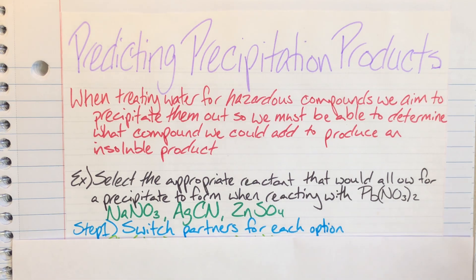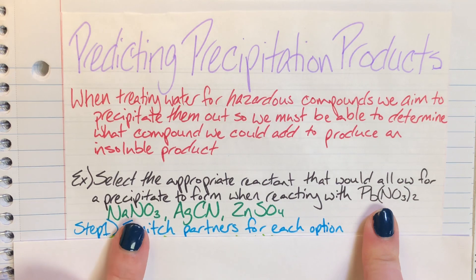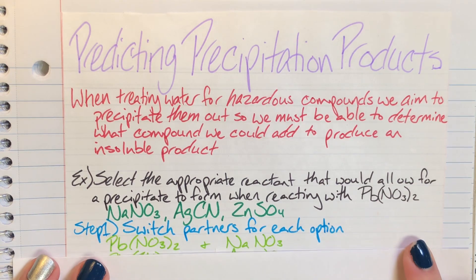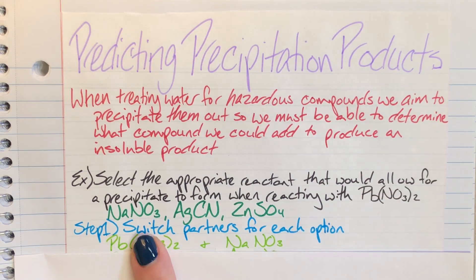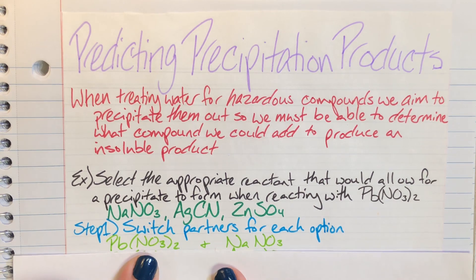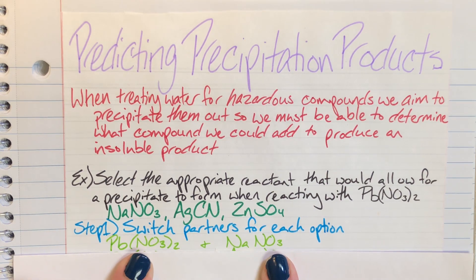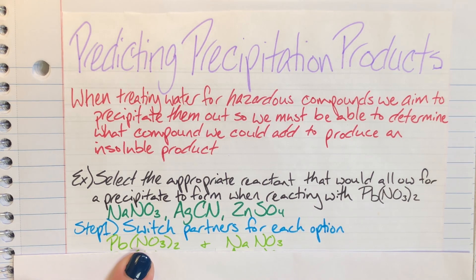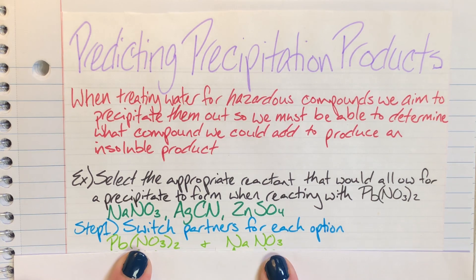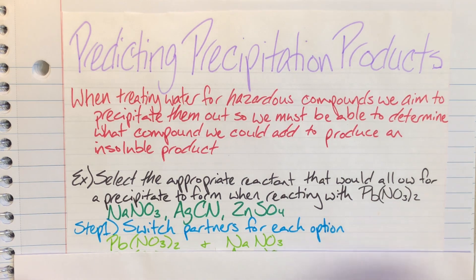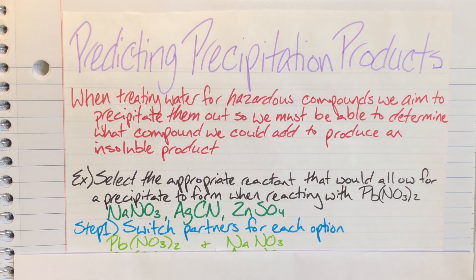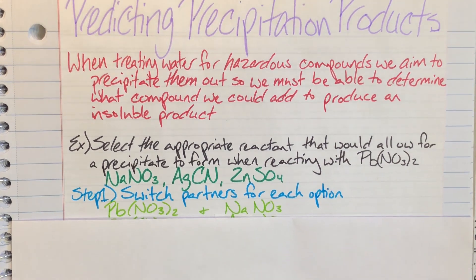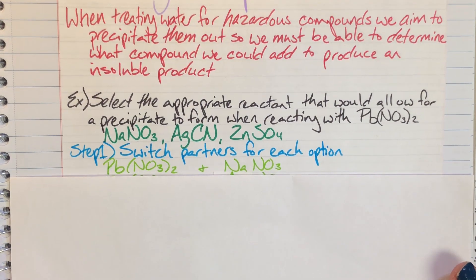My first option was lead(II) nitrate and sodium nitrate. When I switch nitrate for nitrate, I'm left with lead(II) nitrate and sodium nitrate. I haven't done anything very efficient here - I'm left with the exact same compounds that I put in. Since I know that these two were initially soluble because they were mentioned, this is not helpful, so that's not going to probably be the thing that I want to choose.